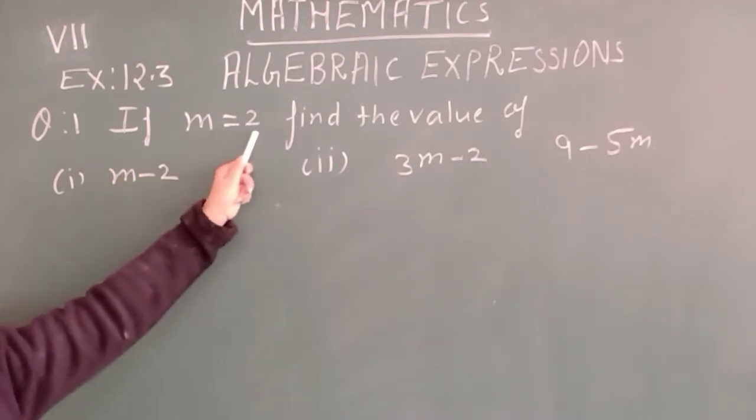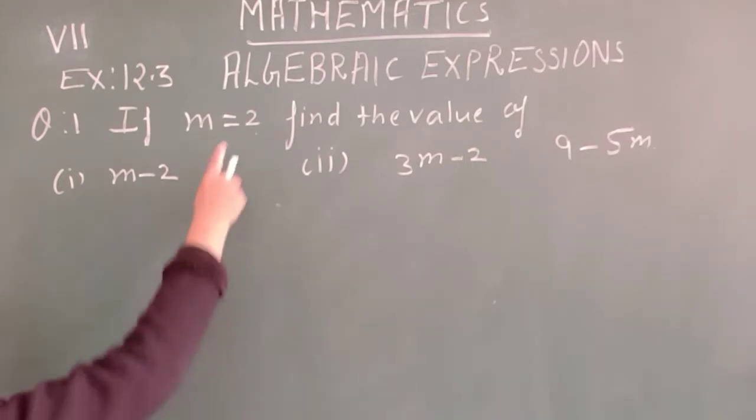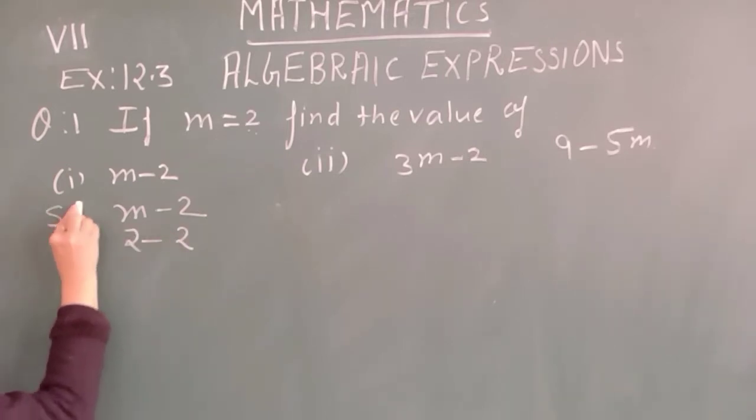You have m value 2 given and you have to find out value for m minus 2. In place of m we will use 2. So solution, in place of m we will give 2. So 2 minus 2, find an answer 0.